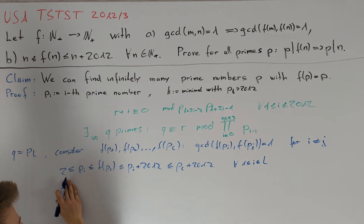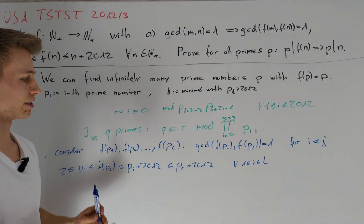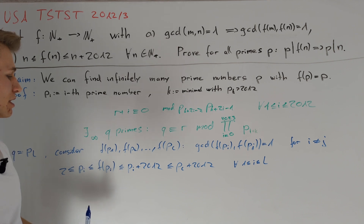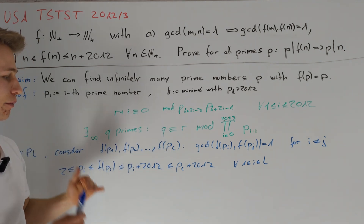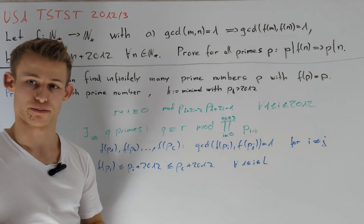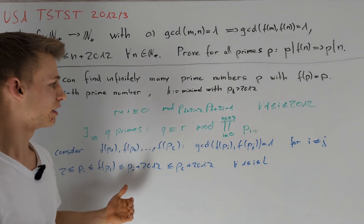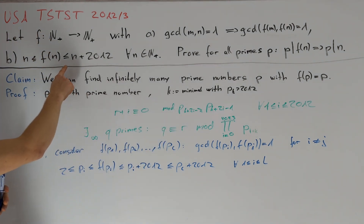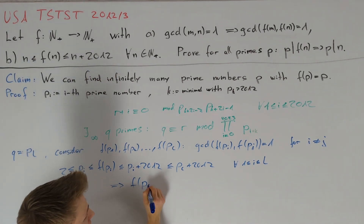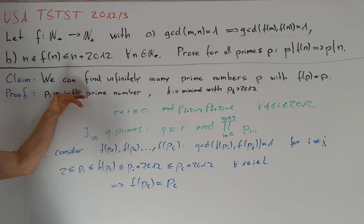Thus, since f(pi) ≥ 2, we know f(pi) has at least one prime divisor between p1 and pl. From this, all l values f(p1), ..., f(pl) are divisible by l different prime numbers, but only p1 through pl are possible prime divisors. Therefore all of these numbers are divisible by exactly one prime. In particular, f(pl) is divisible by exactly one prime. But by our construction, pl+1 through pl+2012 are each divisible by at least two different primes, so since f(n) ≤ n + 2012, we conclude that f(pl) = pl. Since pl can attain infinitely many values, our claim is proven and therefore we are done.